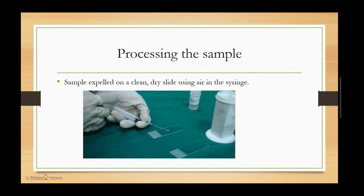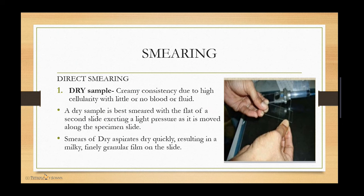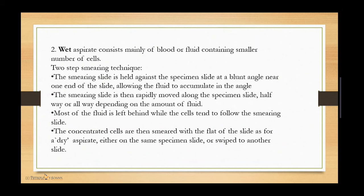After sampling, the sample is expelled onto a clean dry slide using air in the syringe. There are two types of smearing: direct and indirect. In direct smearing, a dry sample has creamy consistency due to high cellularity with little or no blood or fluid, and is best smeared with the flat of a second slide exerting light pressure as it is moved along the specimen slide. Smears of dry aspirate dry quickly, resulting in a milky, finely granular film on the slide.